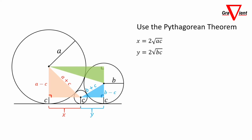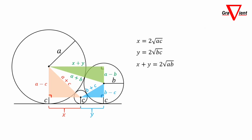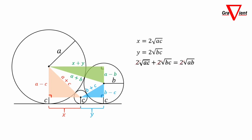Do it one more time with the two larger circles. The base side of the right triangle is X plus Y, the hypotenuse is A plus B, and the other side is A minus B. With the Pythagorean theorem, (X plus Y) squared equals (A plus B) squared minus (A minus B) squared. With a little algebra, we get X plus Y equals 2 times the square root of AB.